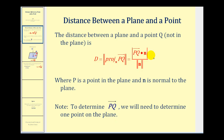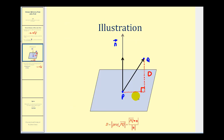Let's take a look at why this formula works. Here we have a plane in blue, and the gray vector here is our normal vector. Point P is a point on the plane, and point Q is the point not on the plane. We want to determine the distance from point Q to the plane, or this distance here, which I have labeled D. Remember when we talked about projections of vectors — if we project vector PQ onto the normal vector, we'll have this vector here. The magnitude or length of this projection will be the same as the distance D, or the distance from point Q to the plane.